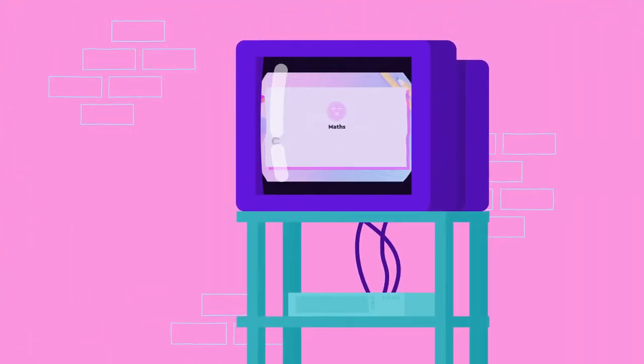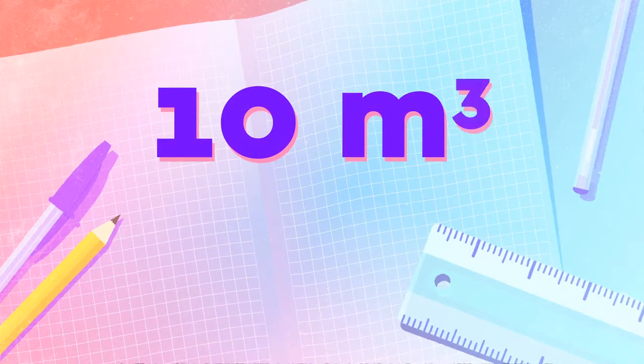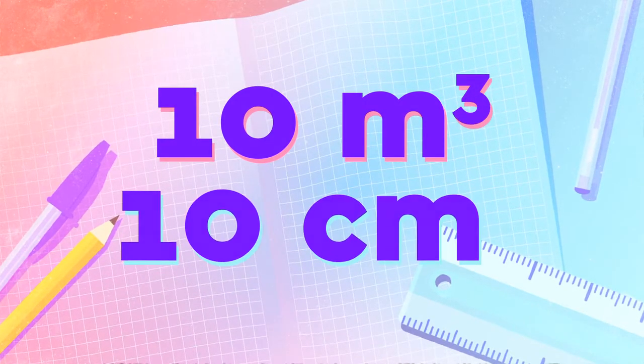In a previous lesson on conversion of metric units, we established the different units that we use to measure quantities such as mass, lengths, and volumes. Those measurements highlighted what type of unit we would use depending on the size of the measurement. We will build on that topic by comparing units for lengths, areas, and volumes, where volume measurements will reflect a measure based on meters cubed or centimeters cubed.